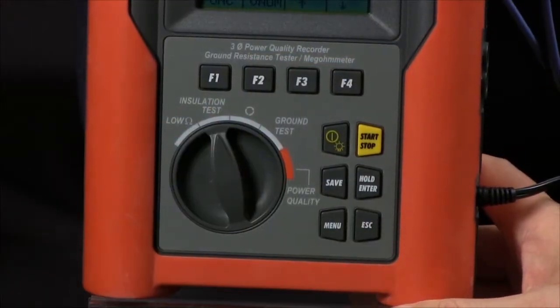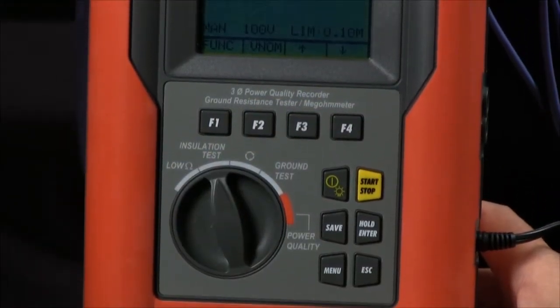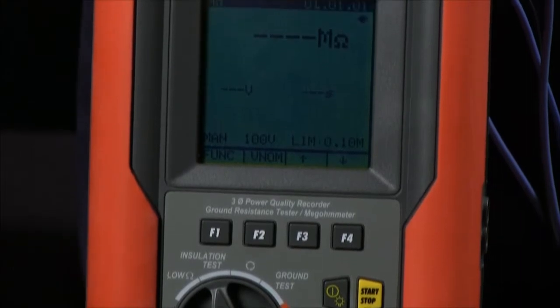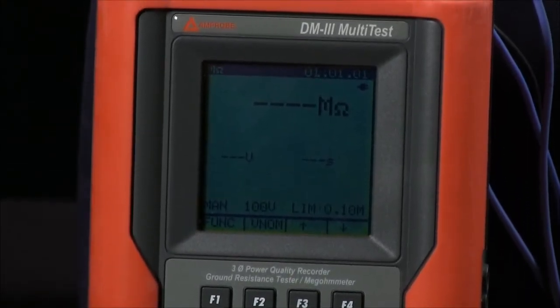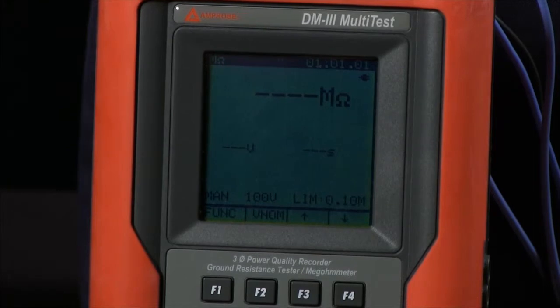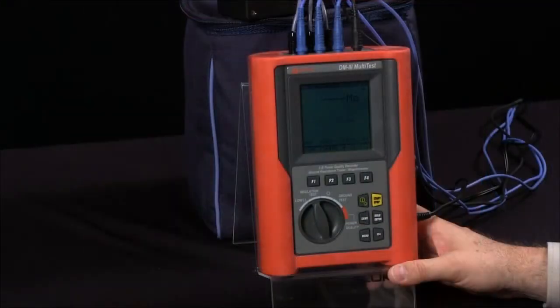I can also shift over to my insulation test, and I can range from 50 volts up to 1,000 volts of test voltage in specific increments, thereby also checking my insulation as well as my motor windings.